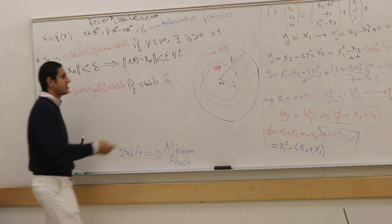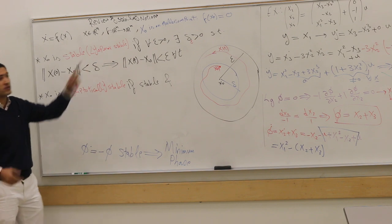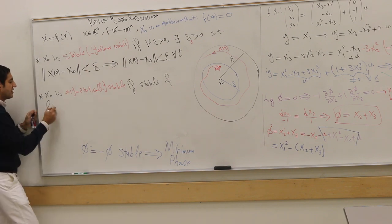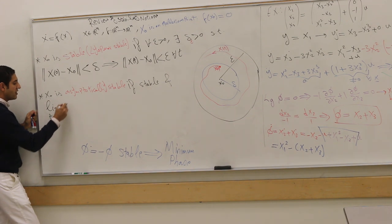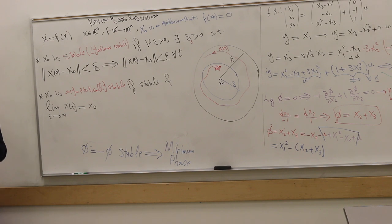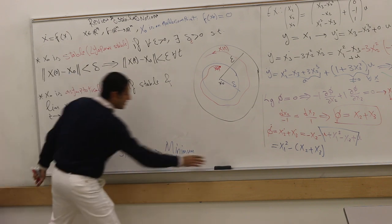So the usual notion of stability that we have in our minds as engineers, that I'm going to eventually go back to the point, is not included in the mere stability. This is actually the asymptotic stability. The limit as t goes to infinity of x(t) is x_0 again. You recover it in the limit, okay? So this is the usual notion of stability that we know.